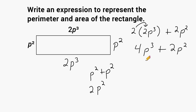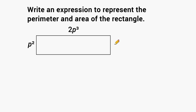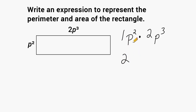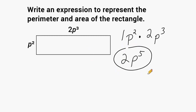Now let's write the expression for the area of this rectangle. The length is p to the second power and the width is 2 times p to the third power. We multiply the coefficients: one times two equals two. Then we multiply p squared by p cubed — adding the exponents gives p to the fifth. Remember, when multiplying variables with the same base, you add the exponents. So the area expression is 2p⁵, and that's all there is to it.